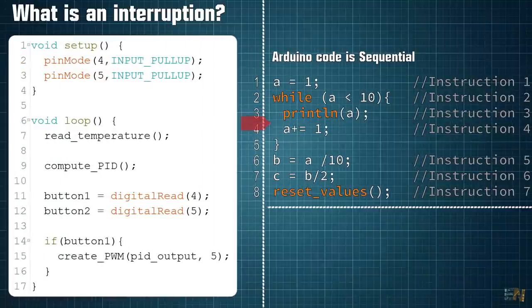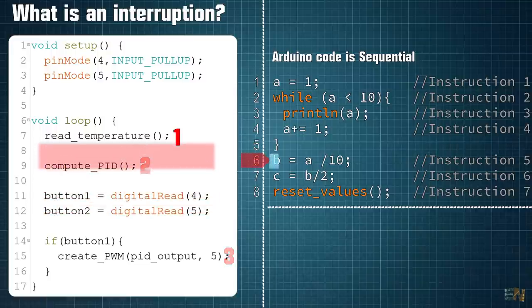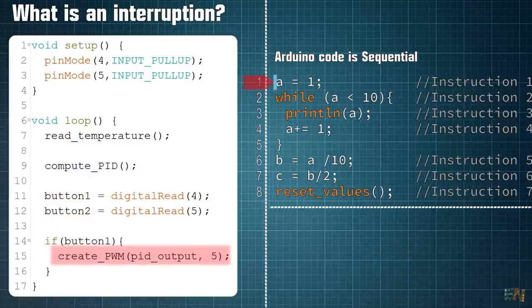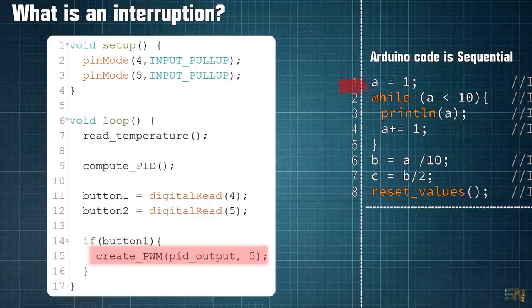For example, in this code here we run three functions and we also read some inputs from some buttons. The first function will read the temperature from a thermocouple. The second function calculates some PID values and the third function applies the PID result to some analog outputs to control a heater.